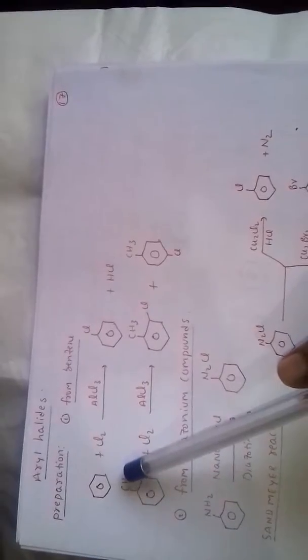Here also the same Cl+ is generated. But here Cl is an ortho-para directing group. Cl+ may attach at ortho position or para position, with para always being the major product.